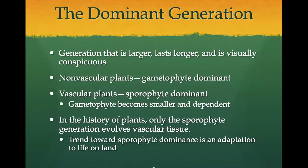In the plant life cycle, one of the two alternating generations acts as the dominant generation — the one that carries out the majority of photosynthesis. The major groups of plants differ as to which generation is dominant. In the mosses or non-vascular plants, the gametophyte is dominant, but in the other three groups of plants the sporophyte is dominant. Only the sporophyte evolved vascular tissue, so the shift to sporophyte dominance is an adaptation to life on land.